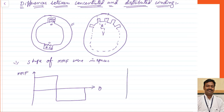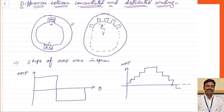Whereas if you go for distributed winding, in that case it becomes trapezoidal, where the angle between two adjacent conductors will be beta, so it will increase like this. In a similar way it will go on decreasing, and this will be in the opposite direction. You can see that this MMF wave will be nearly approximating to a sine wave.